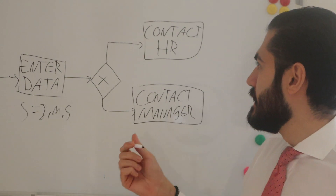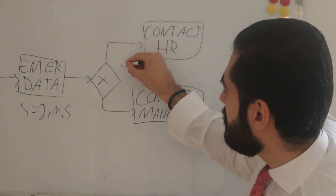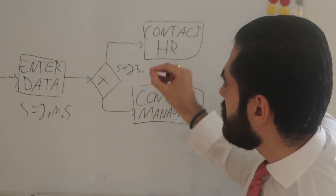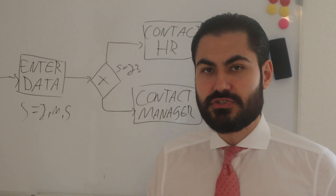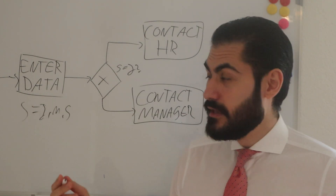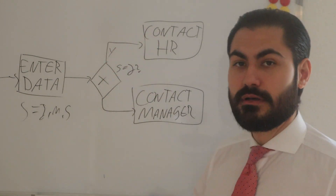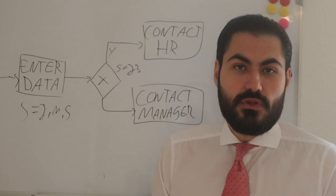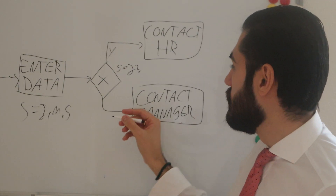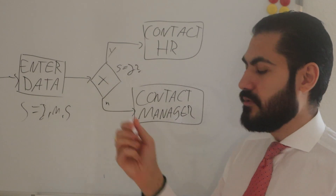At this either-or gateway we ask: does seniority equal junior? That's the condition. If yes, we go this route on top. If no — meaning the seniority is medium or senior — we go down here.